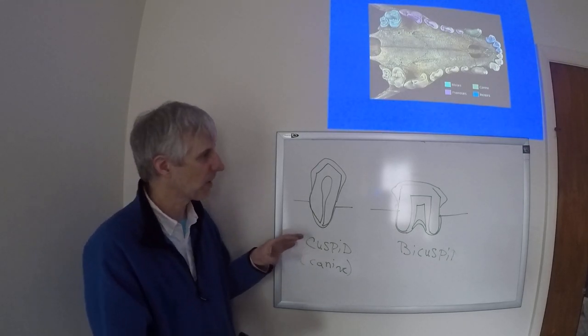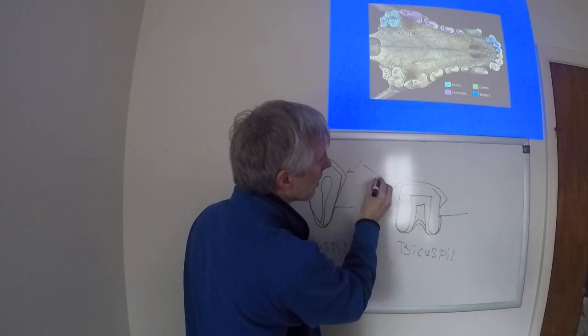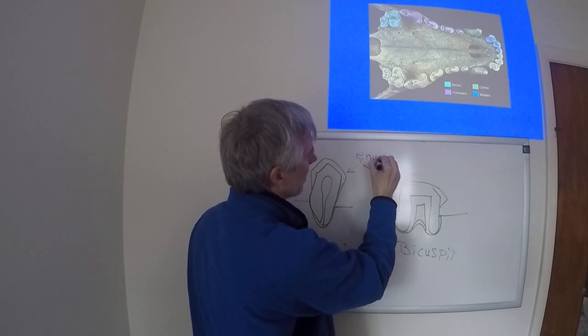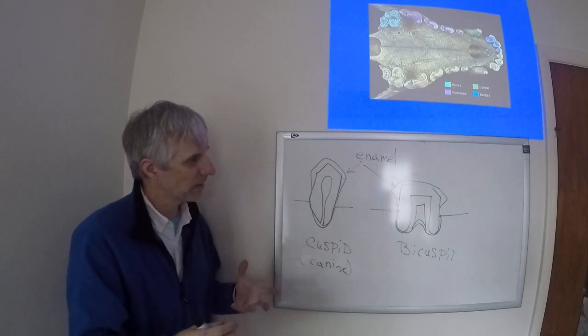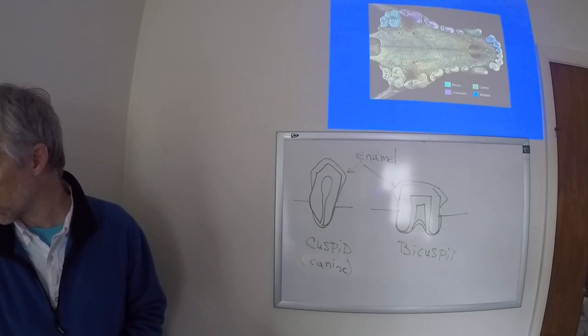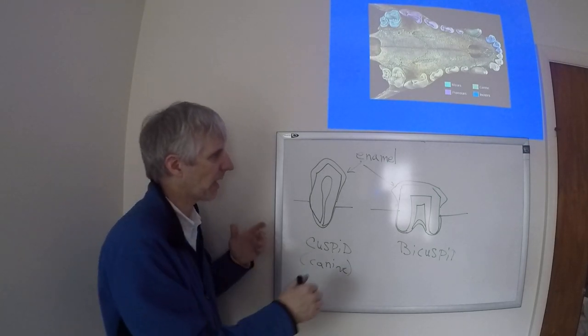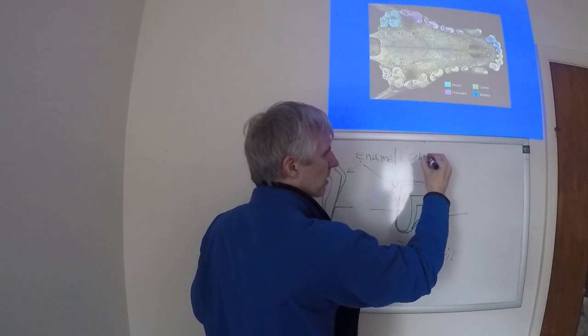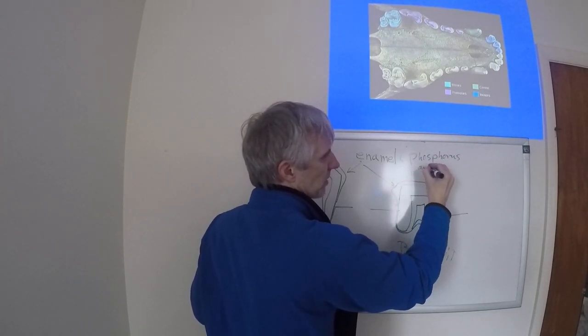In terms of material, the outside of the tooth is coated with enamel, that extremely hard surface made up of a lot of phosphorus and calcium.